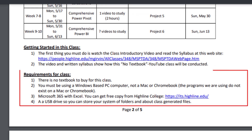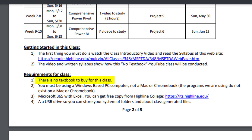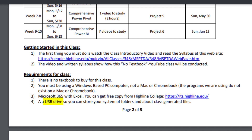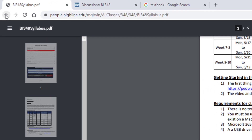The other thing to look at in this syllabus, which you know from all of the prerequisite classes, is the requirements for this class. There's no textbook. You must be using a Windows-based PC computer, not a Mac or Chromebook, because the programs we're using don't work on those computers. You need Microsoft 365 with Excel, and you can get a free version from Highline using this link. If you're going to use a computer from Highline — meaning you checked out a computer — you definitely want a USB drive to save all your work. If you're working on your own computer, save everything to your computer.